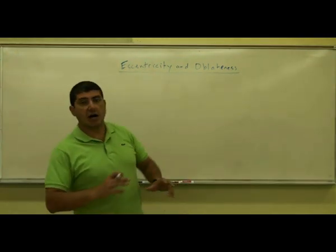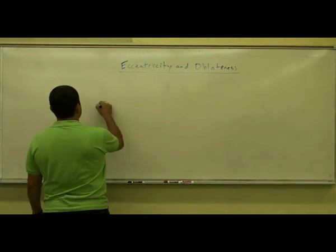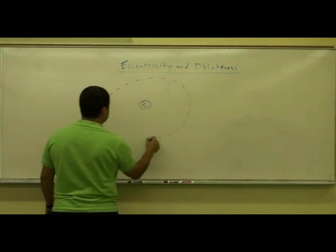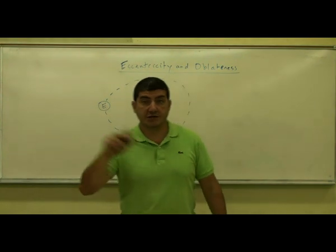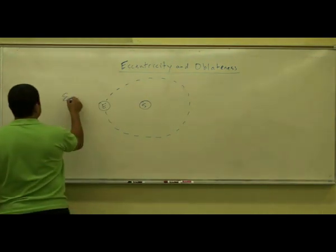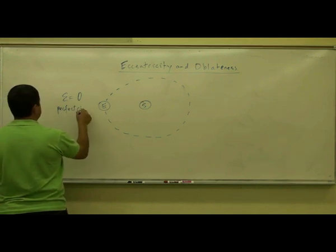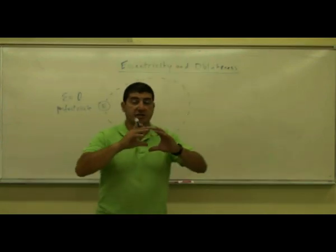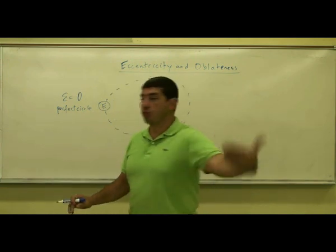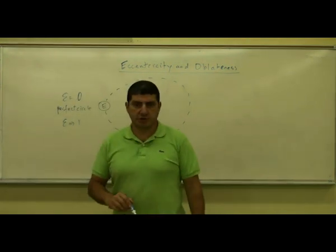Eccentricity means how circular or how elliptical the orbit of a planet is. We draw the Earth and the Sun, and we want to see the circularity of the orbit of the Earth around the Sun. If it's a perfect circle, the eccentricity is zero. As the circle gets more and more elliptical, it begins looking like a straight line, and the eccentricity approaches one.